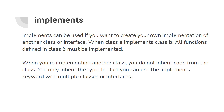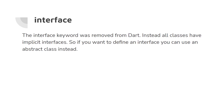For example, we have class B and class A — class A implements class B, meaning class A is going to implement all functions in class B. If you have a class and want another class with the same functions but different implementations, you use the implements keyword. Note: the 'interface' keyword was removed from Dart and instead classes have implicit interfaces — you can use abstract instead of interface.